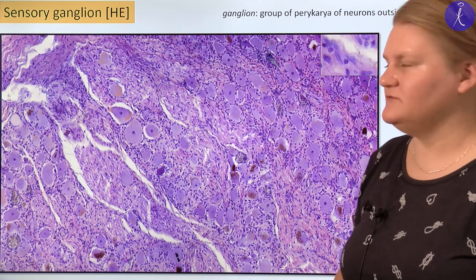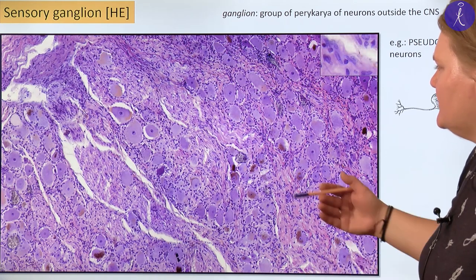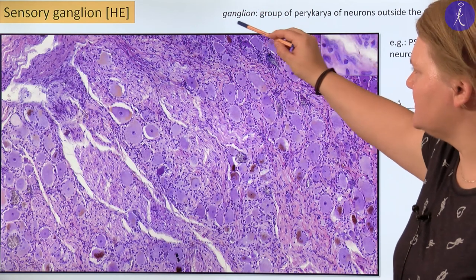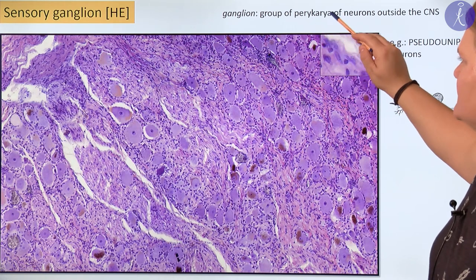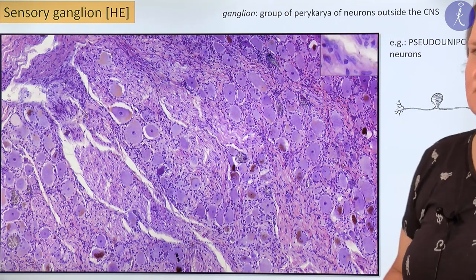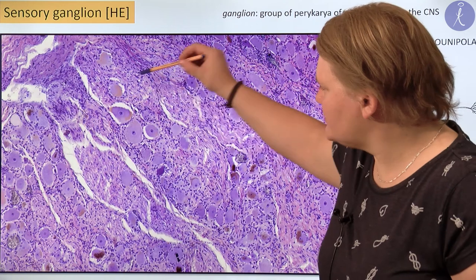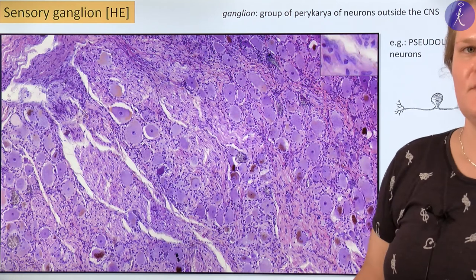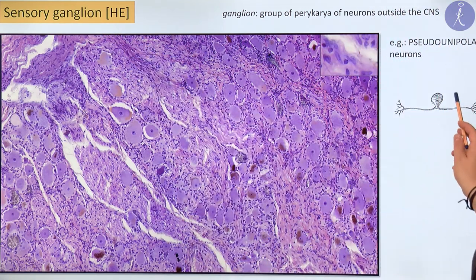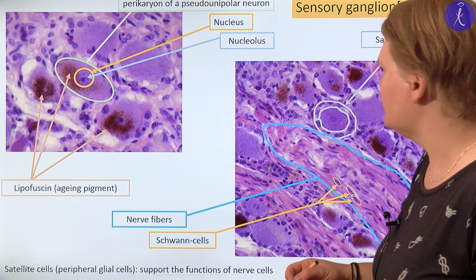The next preparation is about the sensory ganglion, stained with hematoxylin-eosin. Before I talk about the preparation, I would like to define what a ganglion is. A ganglion is a group of cell bodies — pericarya — of neurons outside the central nervous system. The pericarya you can see here are those of pseudounipolar neurons, because we are looking at a sensory ganglion. After that I would like to show you a magnified picture of the sensory ganglion.